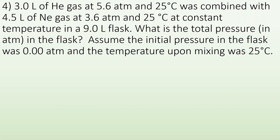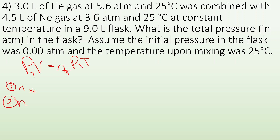Number four: 3 liters of helium gas at 5.6 atm and 25°C was combined with 4.5 liters of neon gas at 3.6 atm and 25°C at constant temperature in a 9-liter flask. What is the total pressure in atmospheres? We're going to use PV = nRT three times: first to find moles of helium, then moles of neon, and then use total moles to find the final pressure.